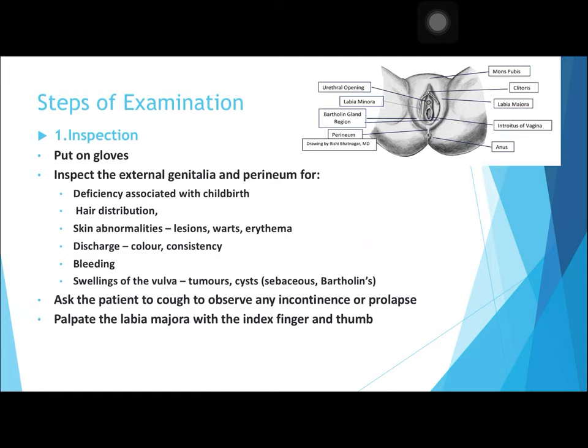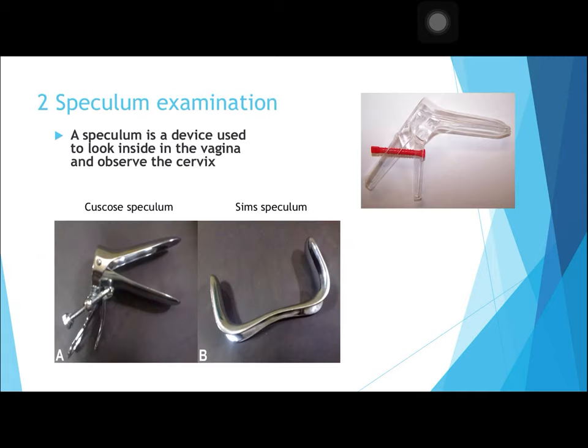The next step is speculum examination. A speculum is a device used to look inside the vagina and observe the vaginal walls and the cervix. Different types of speculums are used — the Sims speculum shown in figure B, and the Cusco speculum shown in figure A. The Cusco speculum is most commonly used in gynecological examination in outpatient settings, as shown in the figure as a metallic Cusco speculum.